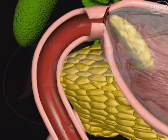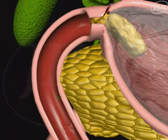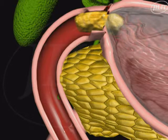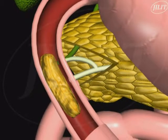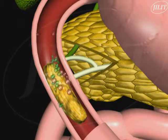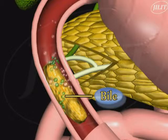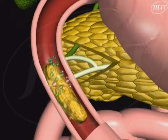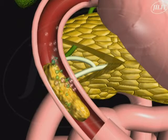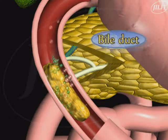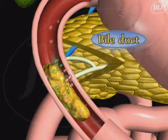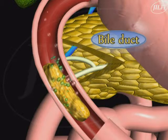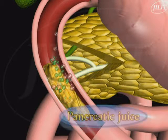Relaxation of the pyloric sphincter allows the chyme to gradually enter the duodenum, the first part of the small intestine, which receives chyme from the stomach and secretions from the gallbladder and pancreas. Bile is an alkaline greenish-yellow liquid produced by the liver and stored in the gallbladder. It enters the duodenum via the bile duct, and though it does not contain digestive enzymes, it helps neutralize the acidic chyme and optimizes the pH for enzyme action in the duodenum.